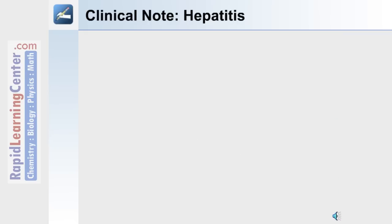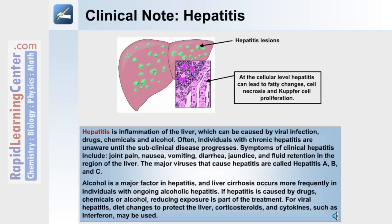Hepatitis is inflammation of the liver, and it can be caused by a variety of things: viral infection, drugs, chemicals, and alcohol. Shown in the diagram on the surface of the liver are hepatic lesions. At the cellular level, hepatitis leads to fatty changes, cell necrosis, and Kupffer cell proliferation. Often, individuals with chronic hepatitis are unaware until the subclinical disease progresses and symptoms appear.